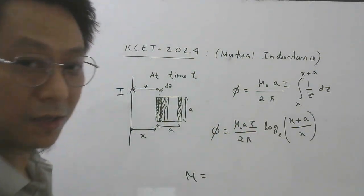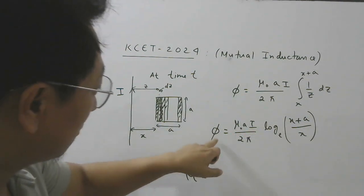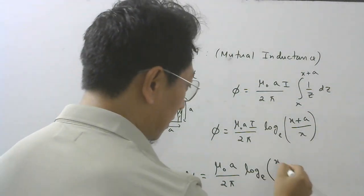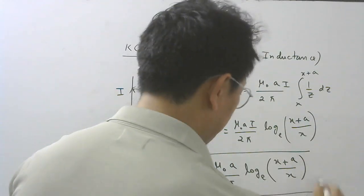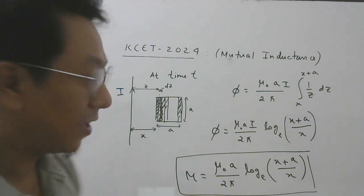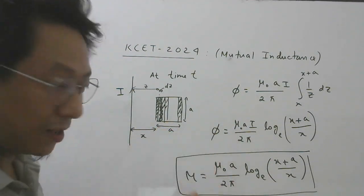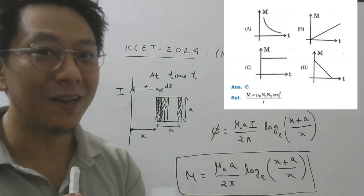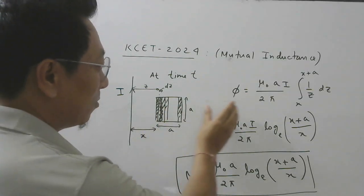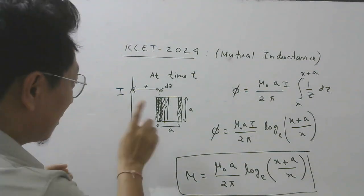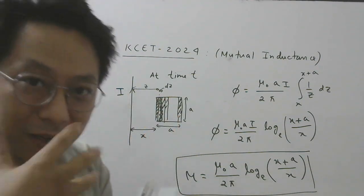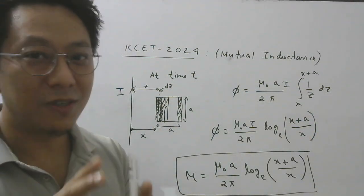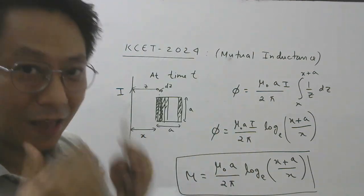This is how flux depends on current. Mutual inductance is the ratio flux divided by current. So M = μ₀A / 2π · ln[(X+A)/X]. As the loop moves farther away, more and more, the flux linkage keeps decreasing, so the mutual inductance will decrease. Therefore, two options cannot be right: the constant one and the increasing one. M must be decreasing.